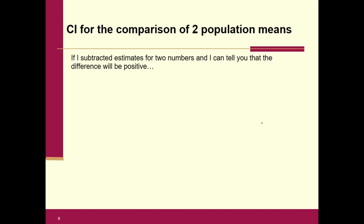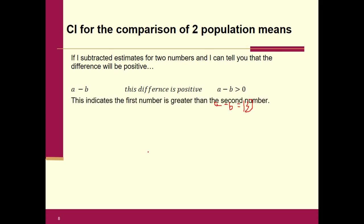This is really important — if you understand this, you pretty much have section 10.2 under your belt. If I subtracted estimates for two numbers, A and B, and the difference A minus B turns out to be positive — say, three — what does that mean? Hopefully you say that A is greater than B. That indicates the first number is greater than the second number.